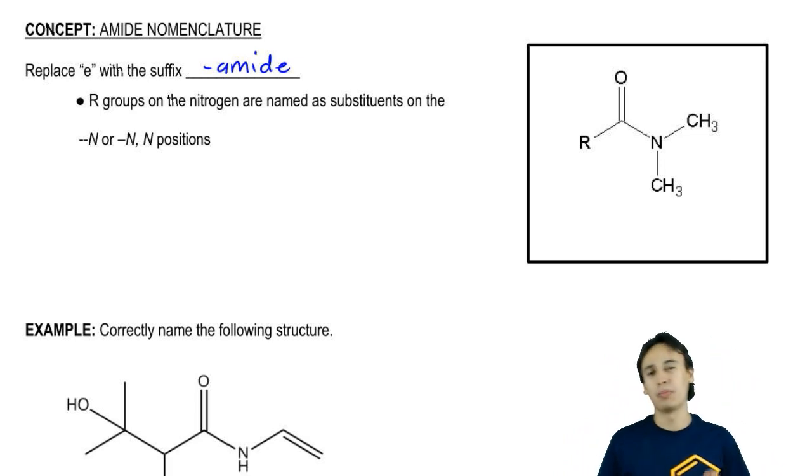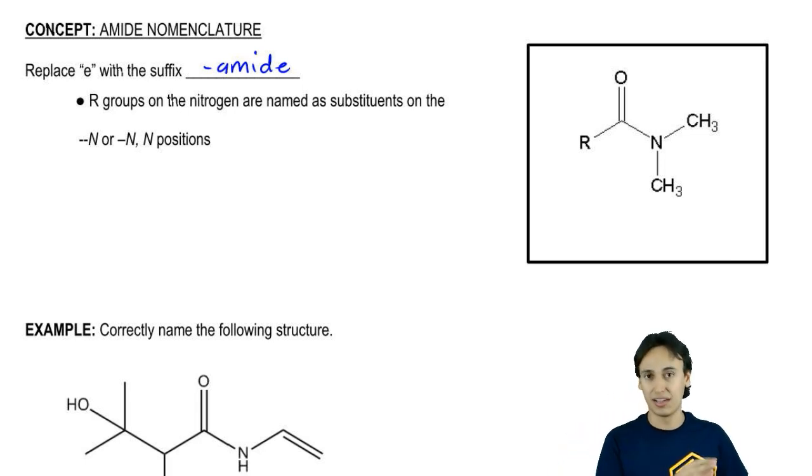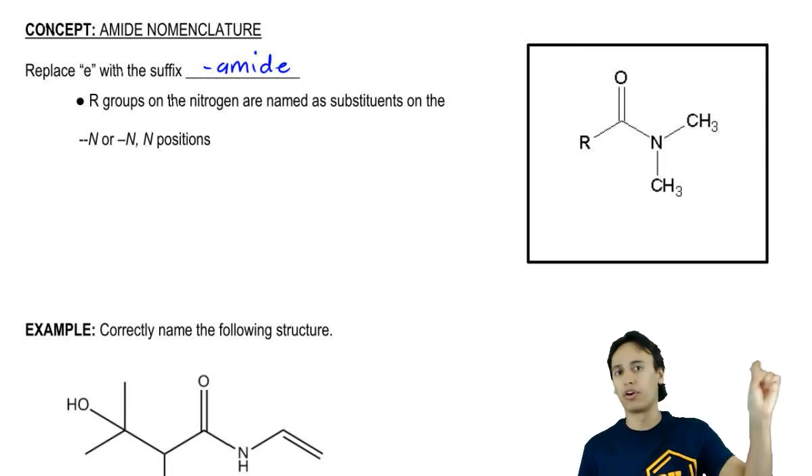The only thing that complicates an amide is that you've got the possibility for multiple R groups on the nitrogen. It's not like an ester, for example. Remember that an ester can only have one R group on an oxygen and that's it, so it's easy.